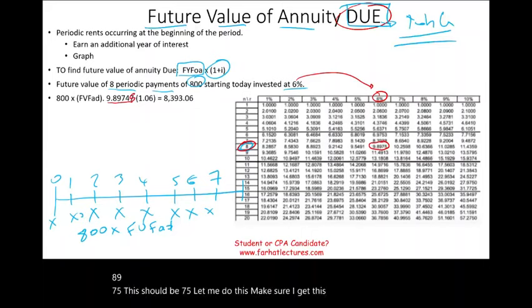We know we need $120,000. We know each deposit is $9,615. We know i equals 8%. The only unknown is how many times we need to make this payment. Mathematically, $120,000 (the future value) equals $9,615 (the periodic payment) times the future value annuity factor. We have everything except the factor.